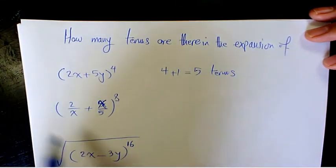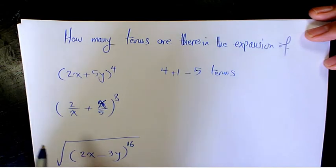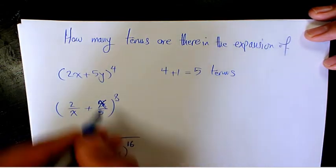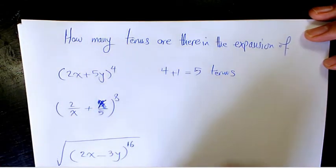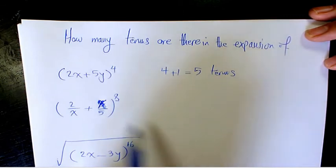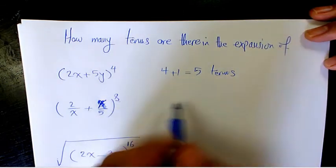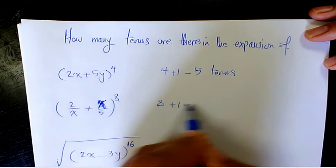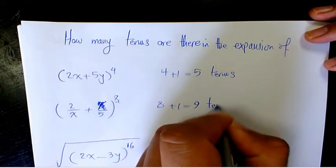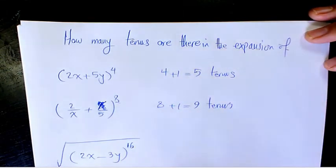Next one is (2/x + x/5)^8. How to find out the number of terms? The exponent is 8, so 8+1 is going to be 9 terms. Very simple.